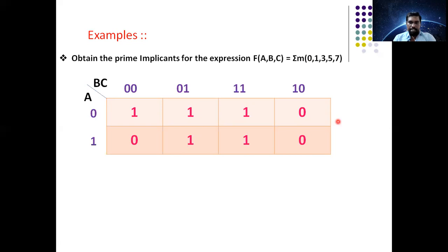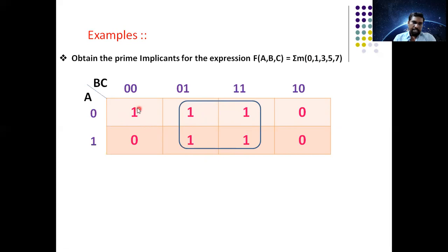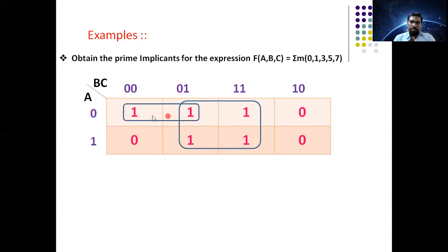Remember: while dealing with SOP, you should only group ones together — you should not group 1 with 0. By folding property, the last cell and another cell could be grouped, but there is a 0 there, so that is not possible. The only option is to group these two ones. Now, for the quad, two rows are involved, meaning no common value between rows, so eliminate the row variable and concentrate on the columns. The second column value is common — it corresponds to C — so the answer for the quad is C.